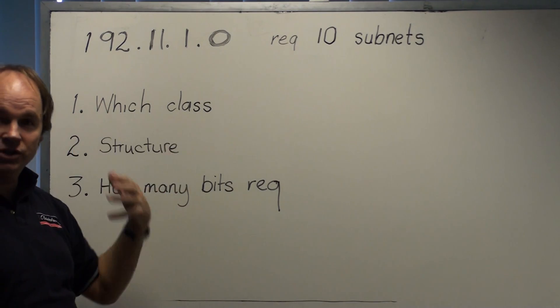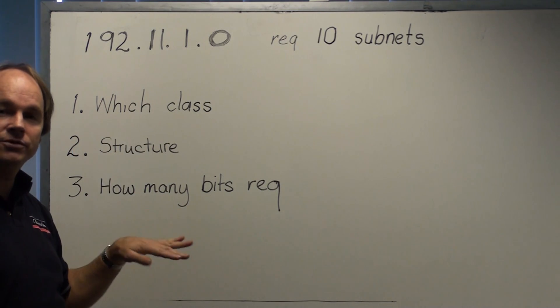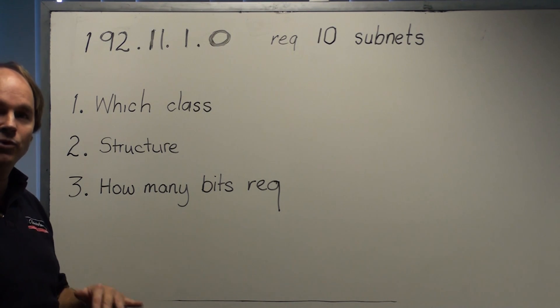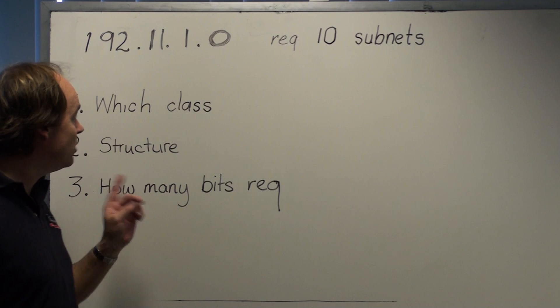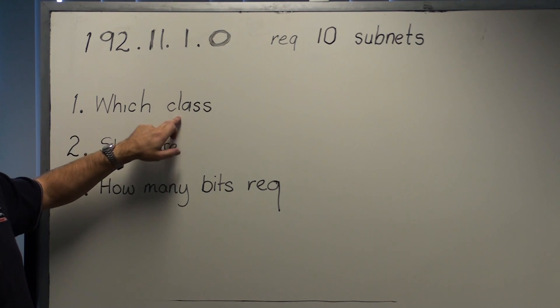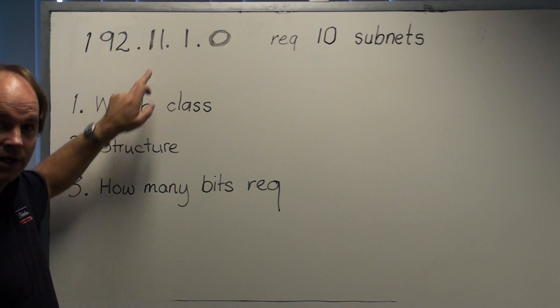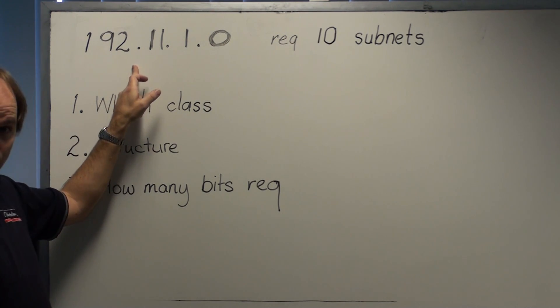What I like to teach in subnetting is to take a step-by-step process and try and repeat that process so you don't miss any of these steps and you build on that level of things. So what we're looking at here is, well which class does this IP version 4 fit into? Is it class A, B or C?